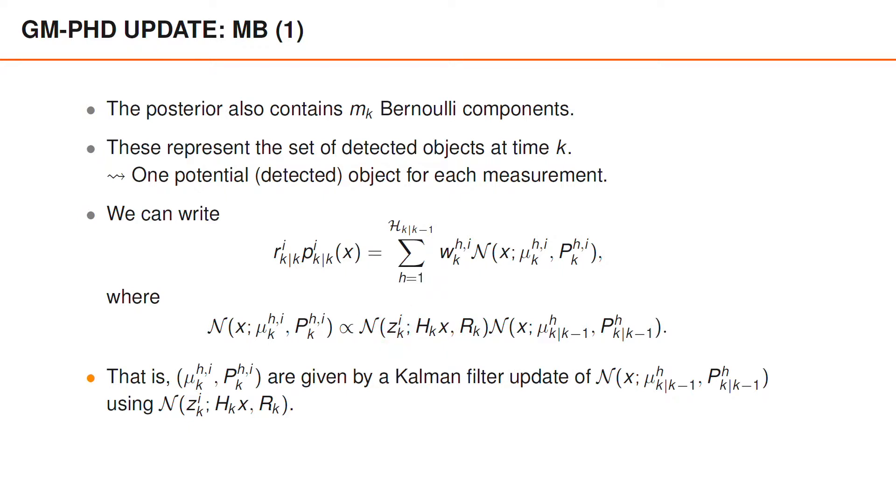the predicted measurement distribution and the Kalman gain are the same for all values of i, even though they do depend on h, since h changes the predicted distribution.